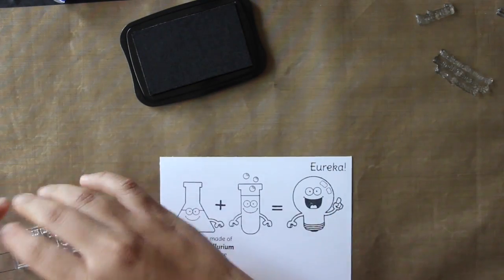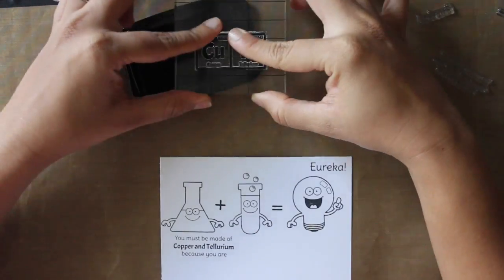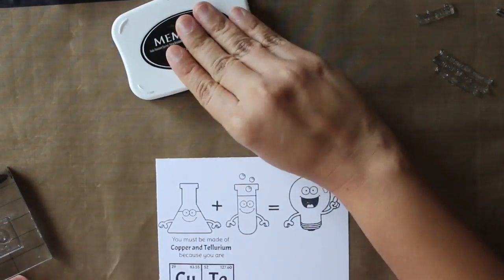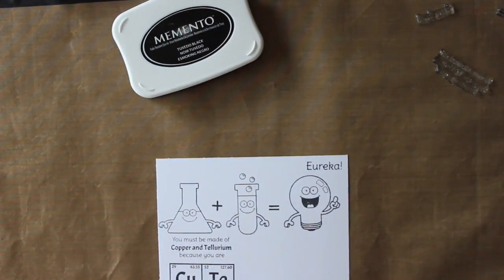So I thought she really deserves this card. And I also love the sentiment which says you must be made of copper and tellurium because you are cute, a perfect sentiment for an eight year old.